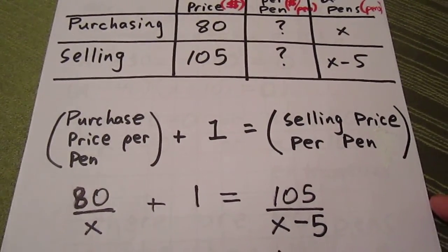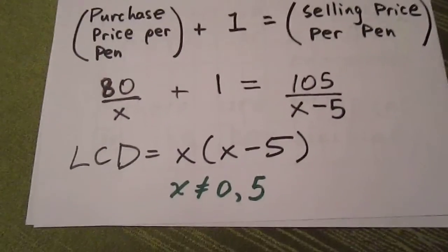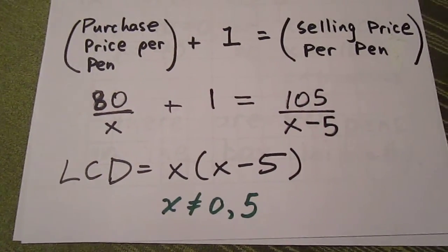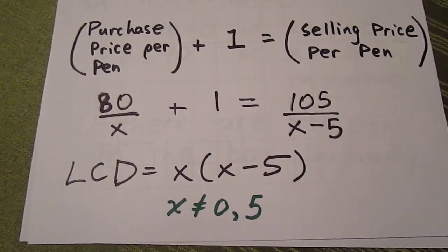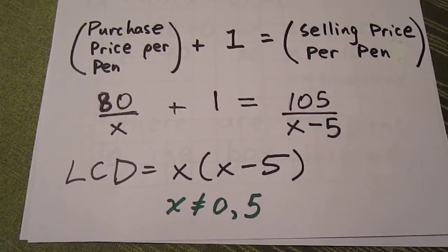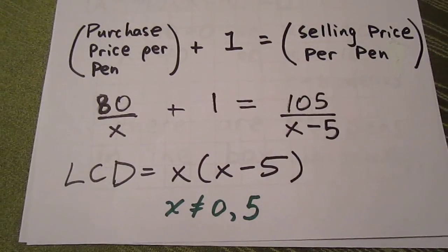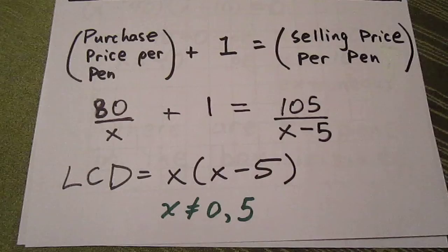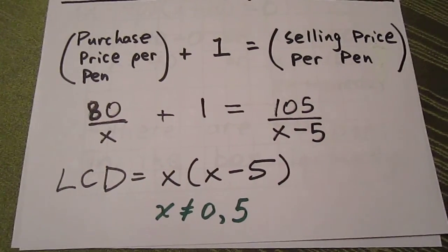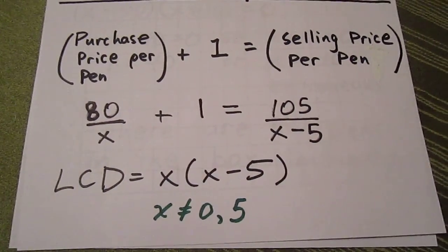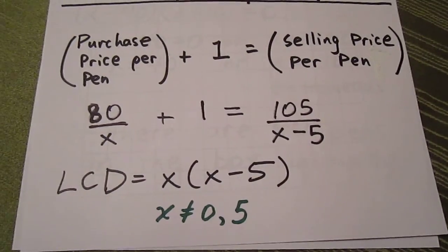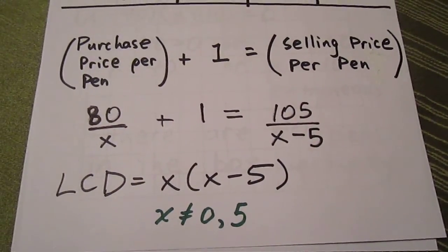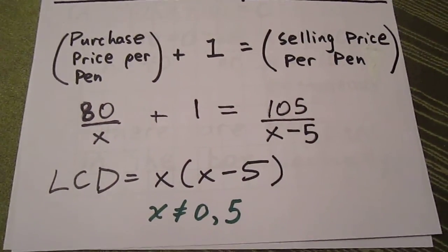Now we have to determine our lowest common denominator. Our lowest common denominator in this case is X times X minus 5. Once we have that set, we have to determine also our restrictions. Since our lowest common denominator is X times X minus 5, our restrictions are that X cannot be 0 and X cannot be 5. If our final solution is either X equals 0 or X equals 5, then it's not a solution at all. Fortunately, in this case, our final solution does not conflict with one of these restrictions.